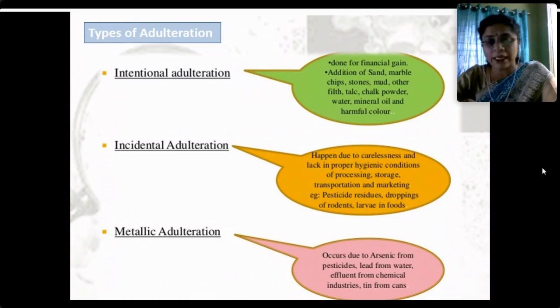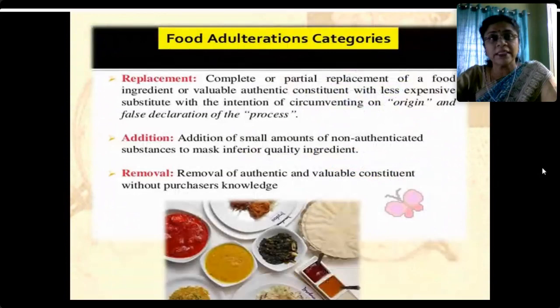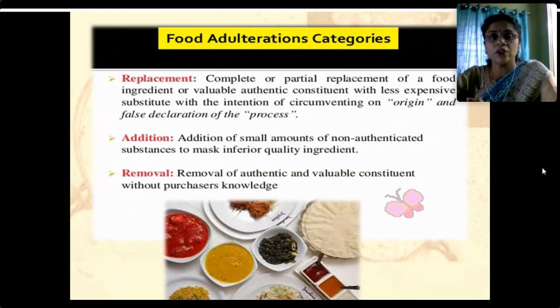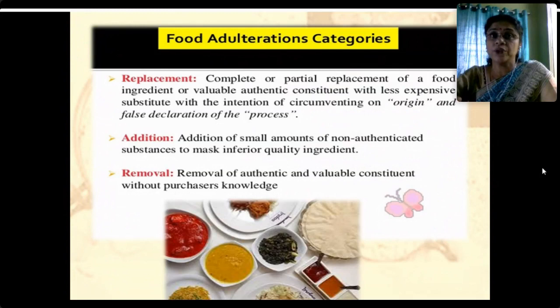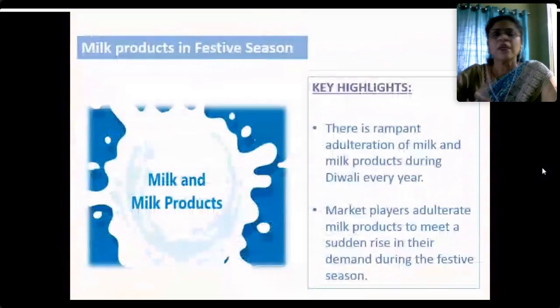Three categories of food adulteration are recognized: replacement — complete or partial replacement of a valuable authentic constituent with a less expensive substitute, often with false declaration on the label; addition — adding small amounts of non-authenticated substances to mask inferior quality; and removal — removing high-quality or costly material and replacing it with substandard cheap material, then selling it at a higher rate without the purchaser's knowledge.